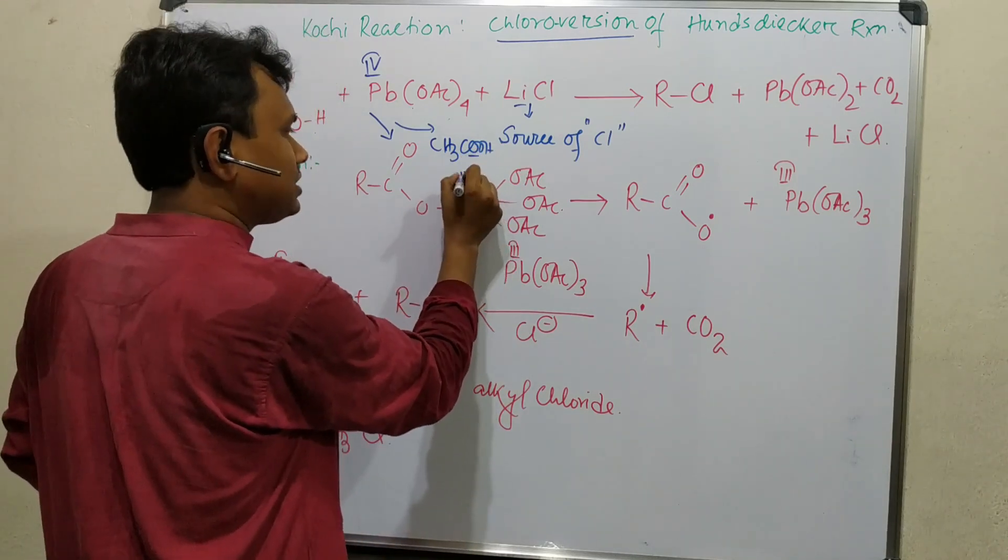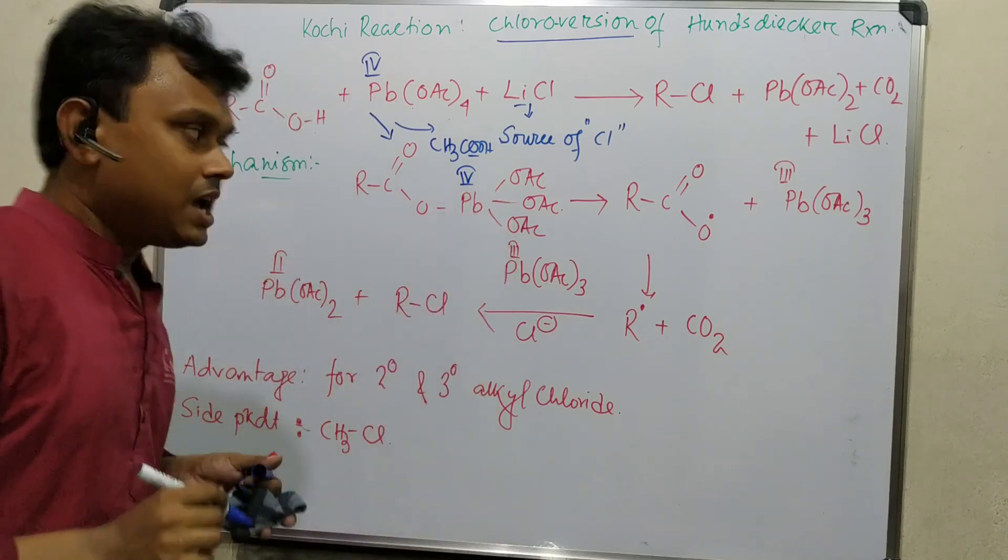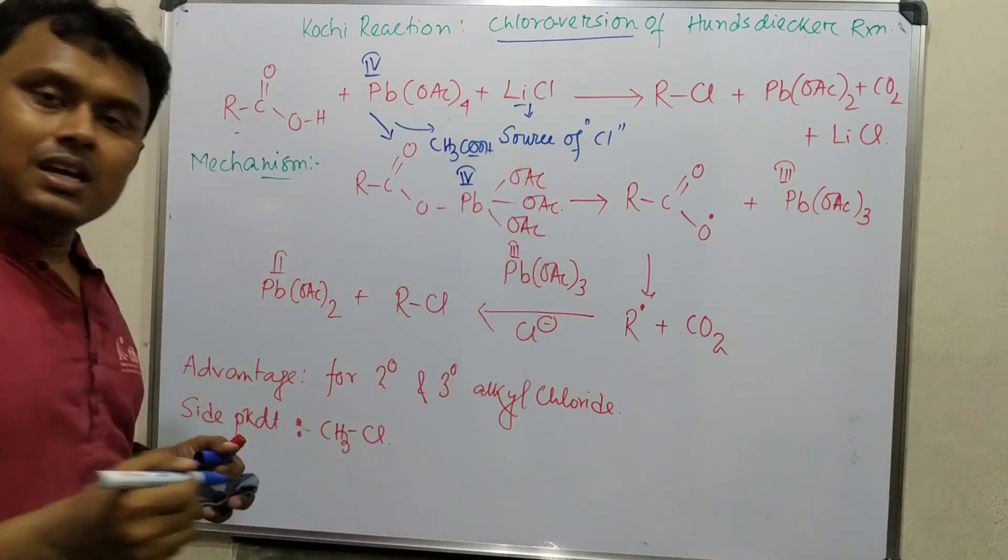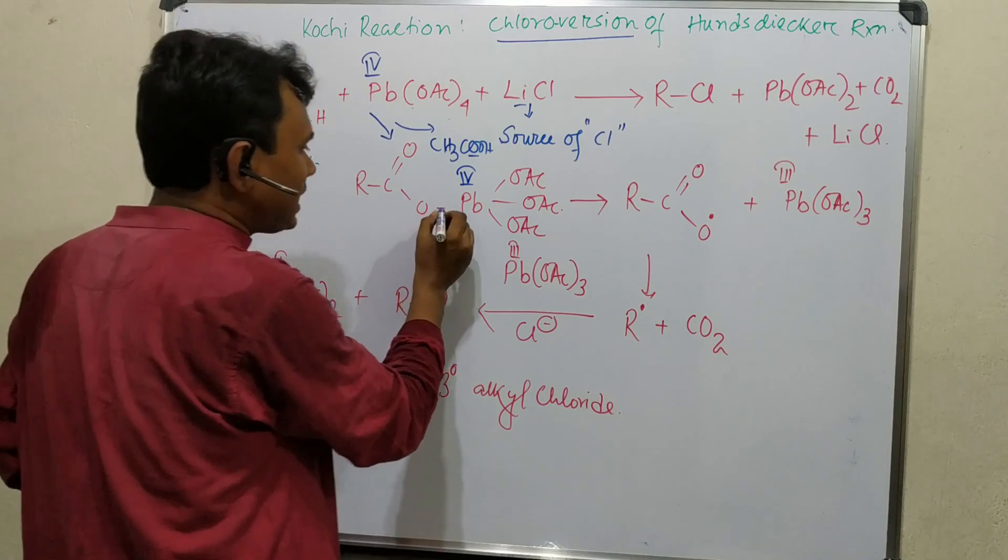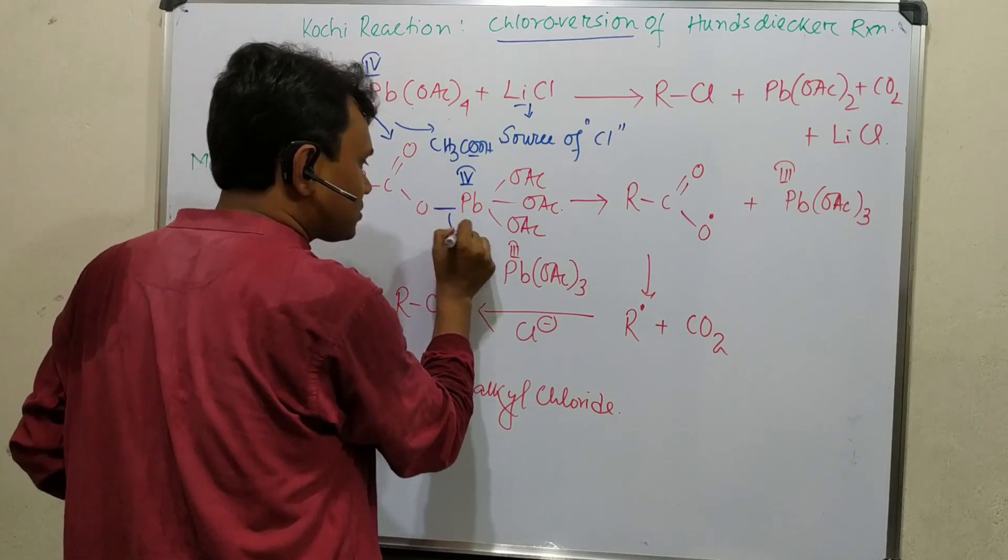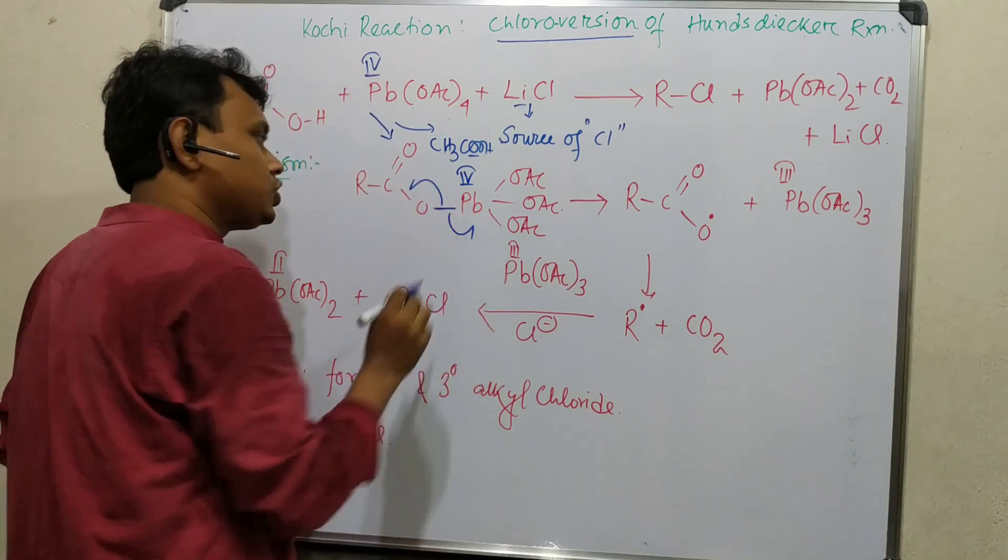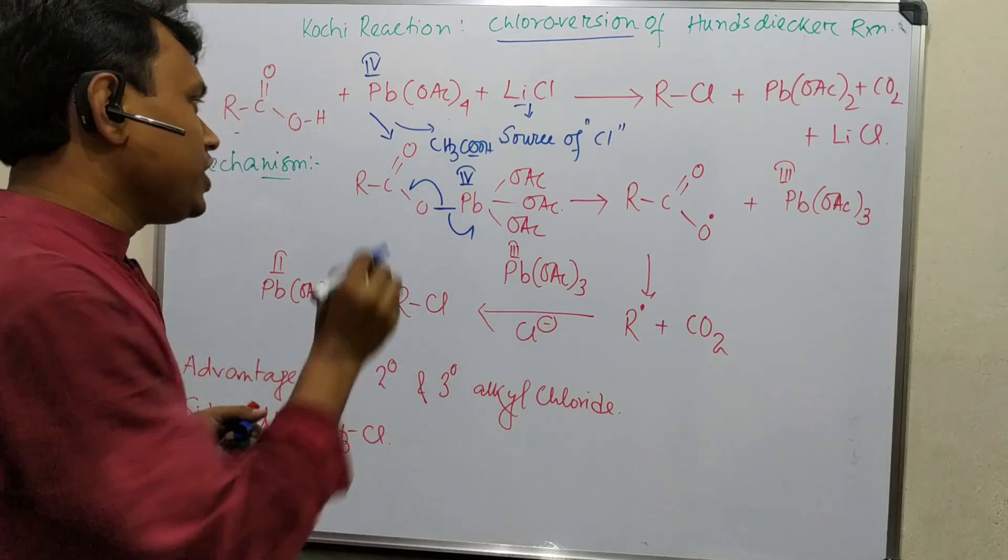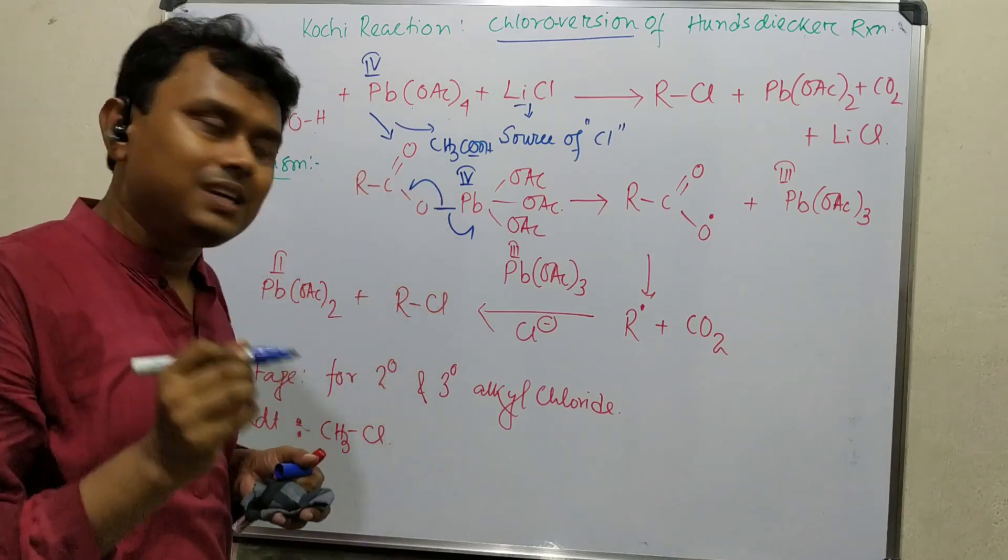Till now, this lead is in plus four oxidation state and this free acetate is added. In the next step, homolytic cleavage between the lead and oxygen happens. This is fish hook arrow notation. Please keep it in mind.